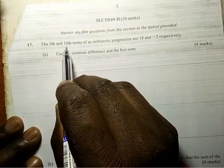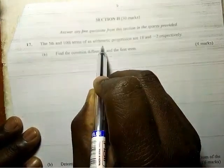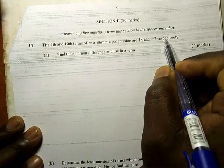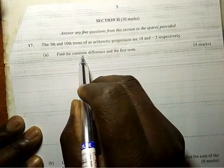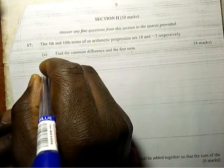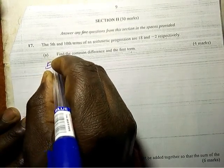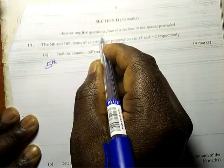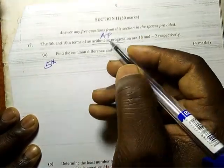The fifth and the tenth terms of an arithmetic progression are 18 and negative 2 respectively. Find the common difference and the first term for 4 marks. So the fifth term of the arithmetic progression, this is the AP.